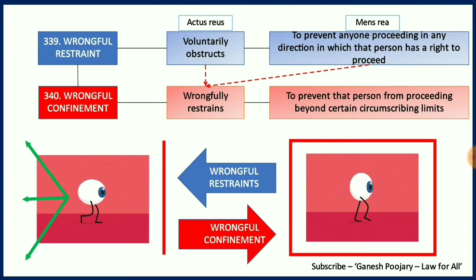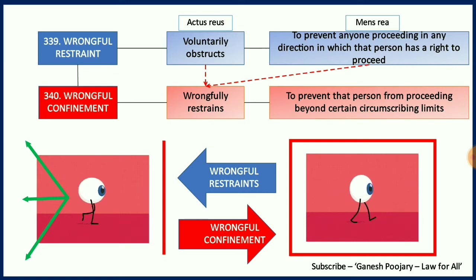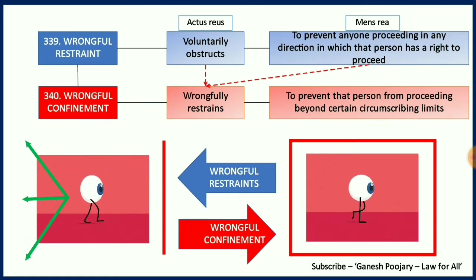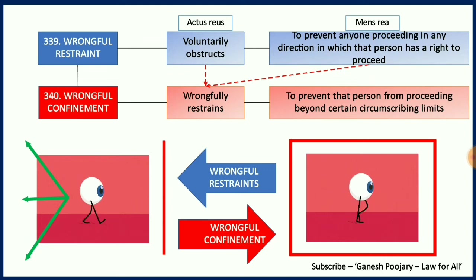In the second image, the person cannot go anywhere because he is being blocked by red lines from all four sides — that means he got confined, he cannot go anywhere. That is what is discussed under section 340: wrongful confinement, where wrongful restraint under section 339 is applied to prevent that person from proceeding beyond certain circumscribing limits. That makes section 340 the aggravated form of section 339.